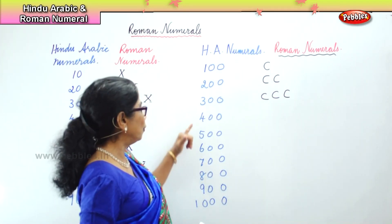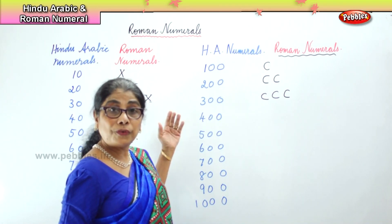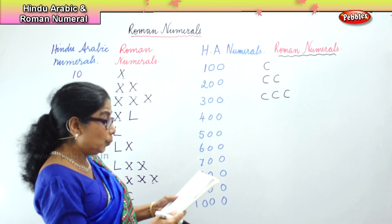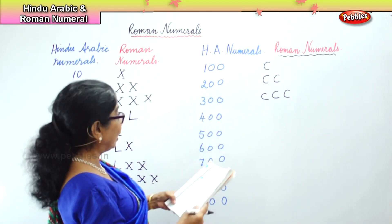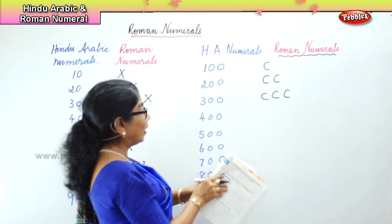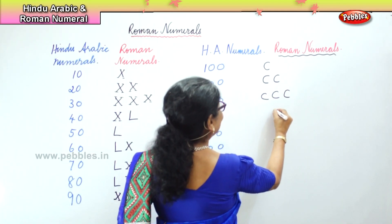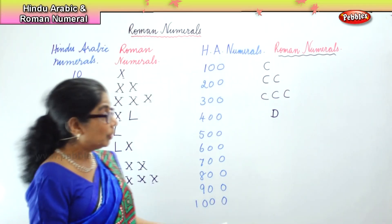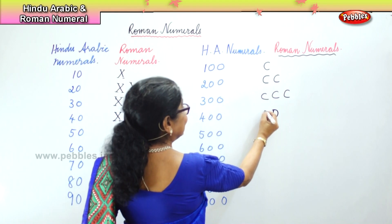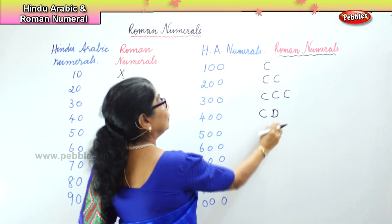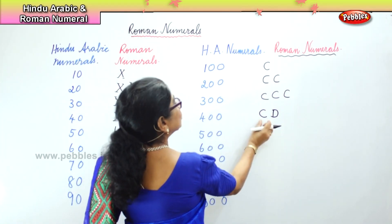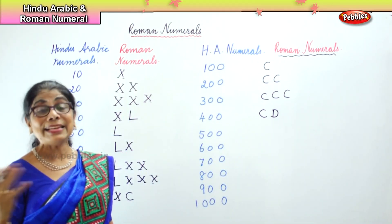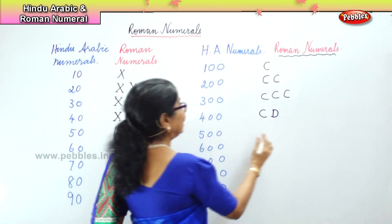There is always a change for 4 and 9: 40 and 90, 400 and 900. When we are talking about 400, what is 500? 500 is D. When you have 1 C to the left of the bigger, greater number — 500 minus 100 is 400. So CD is 400 and then 500 is D.